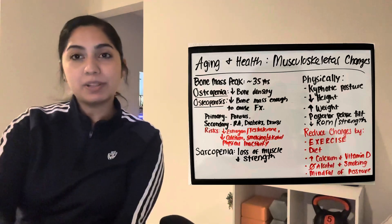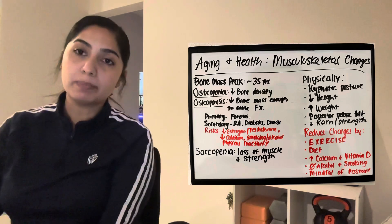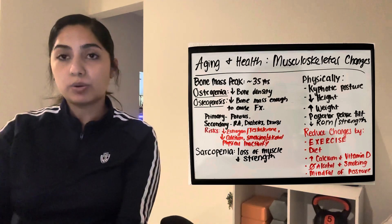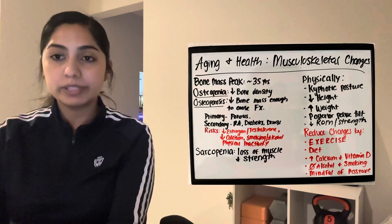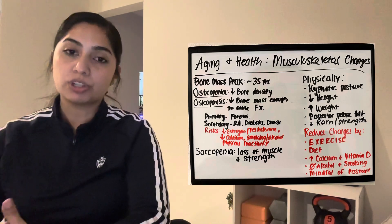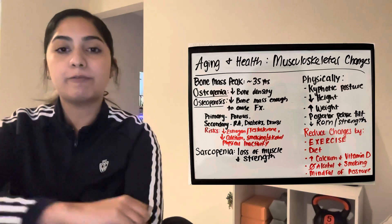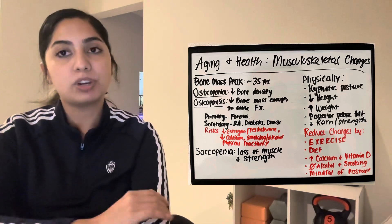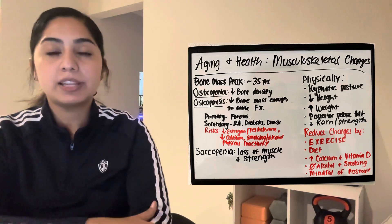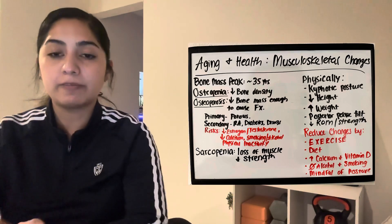Hi guys, my name is Belen and today I'll be talking about aging and the musculoskeletal changes — the bones and the muscles. The skeleton provides support and structure to the body while the muscles provide the force and strength needed to move the body. Early in life the body builds bone mass with a peak at around 35 years of age.